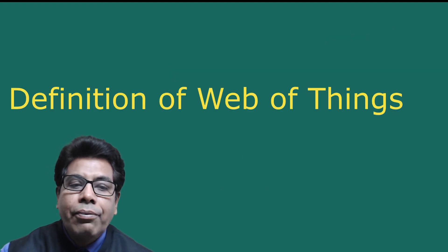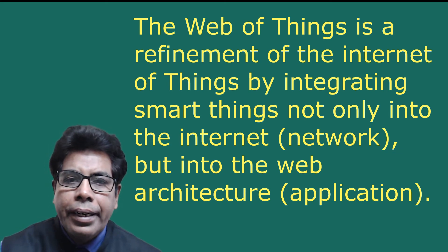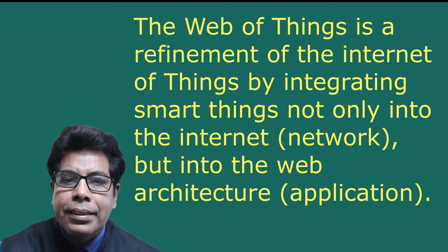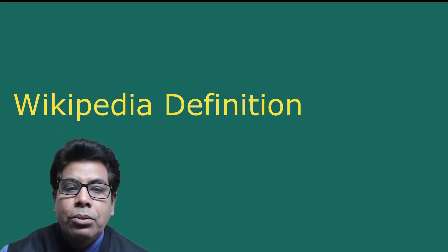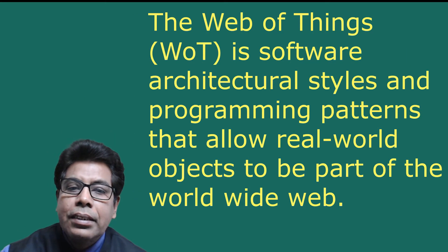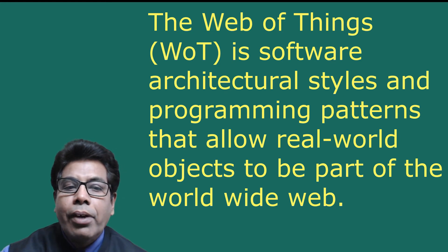The web of things is a refinement of Internet of Things by integrating smart things not only into the internet (that is, the network) but into the web architecture (that is, the application). According to Wikipedia, the web of things is a software architectural style and programming pattern that allows real-world objects to be part of the worldwide web. It provides an application layer that simplifies the creation of IoT applications composed of multiple devices across different platforms and application domains.